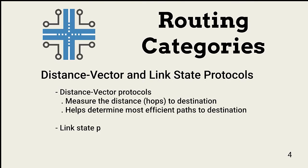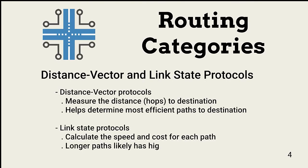Routing protocols fall under one or more categories. Distance and link state protocols help determine the most efficient paths to network destinations. Distance vector uses a number of hops, and link state protocols use actual speed and cost parameters.